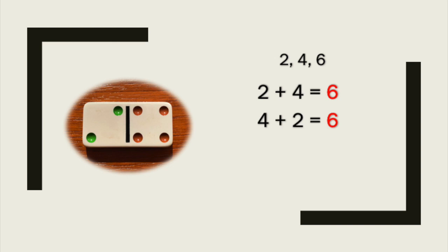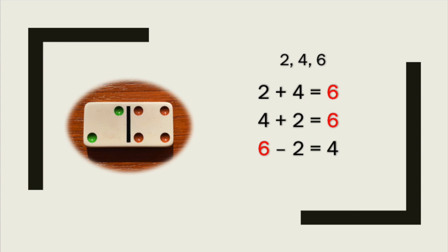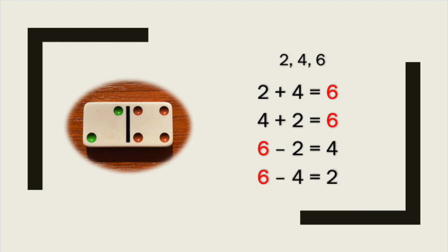The six is highlighted in red because it is the biggest number. The biggest number always starts our subtraction facts. Look at this, I'm still using the same three numbers. If I start with six and take away two my answer equals four: six minus two equals four. And if I start with six again but this time take away four my answer equals two: six minus four equals two.